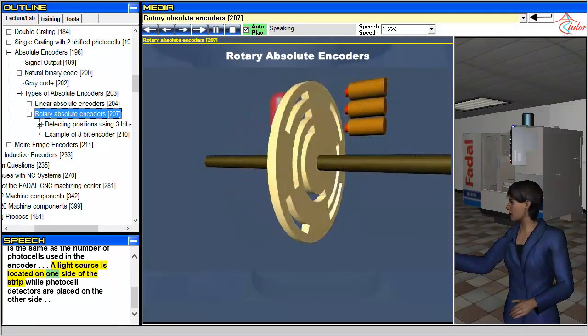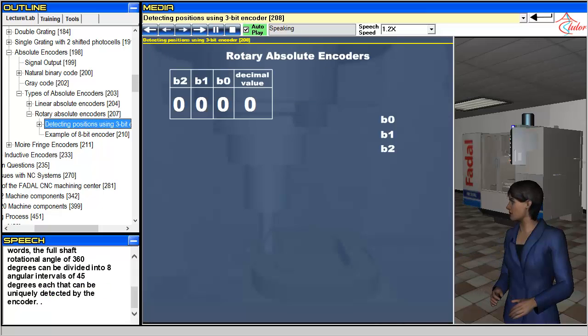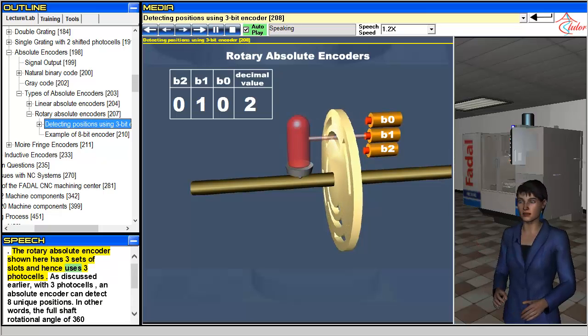A light source is located on one side of the strip, while photocell detectors are placed on the other side.